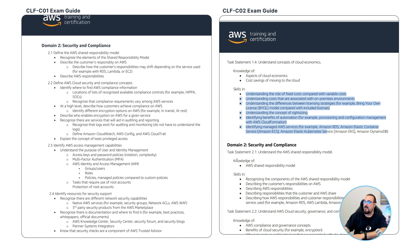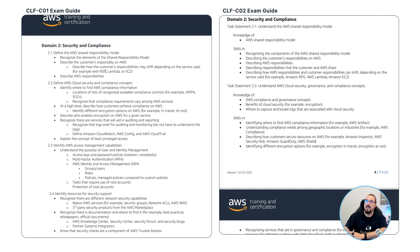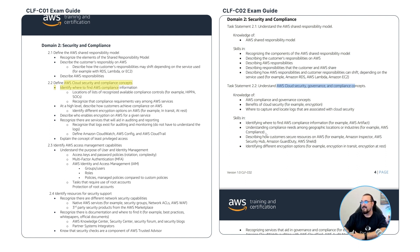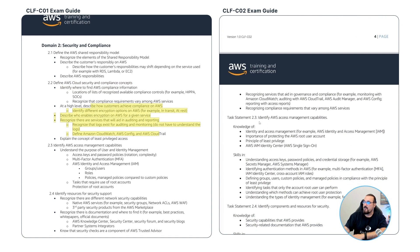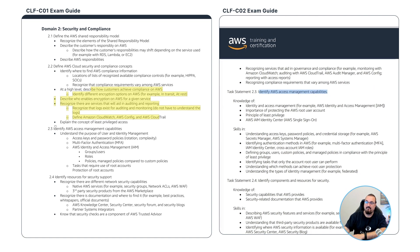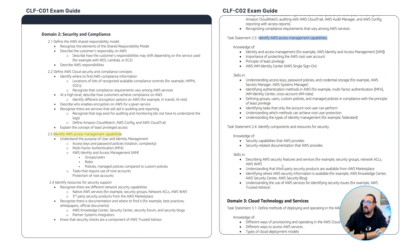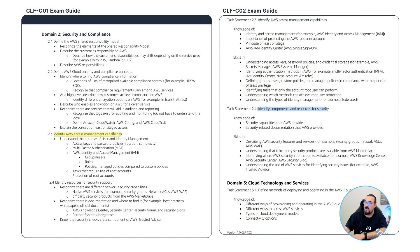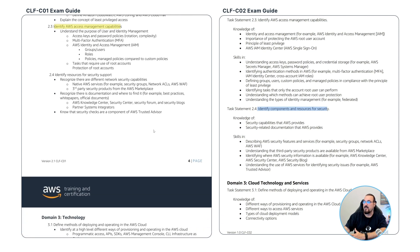Taking a look at domain two, security and compliance — the shared responsibility model was big on the left and is still big on the right. Compliance was a big idea in CLF-01 and is still big in CLF-02. They do call out a few specific things like encryption, but those are general concepts, so it's not any different from the original CLF-01. Access management capabilities were also still a task statement in domain two from before. So it looks like the security domain, other than going up 5% in coverage, really hasn't changed in structure.